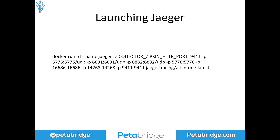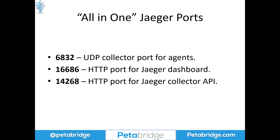We're going to spin up one of these behind the scenes, and you'll notice that the all-in-one Docker container opens a bunch of different ports. Here are the main ones to pay attention to. First, port 6832 — that's the default port the Jaeger agent listens to, and that's where we upload spans by default over UDP. The next port, 16686, is the HTTP port used for actually viewing the Jaeger dashboard, where we can query all the traces our system produces. The last port shown is for when you don't want to use an agent for uploading spans to Jaeger.